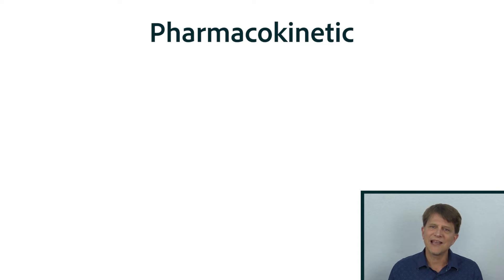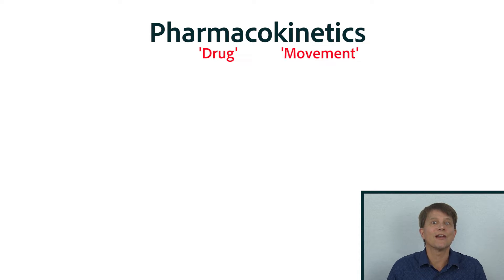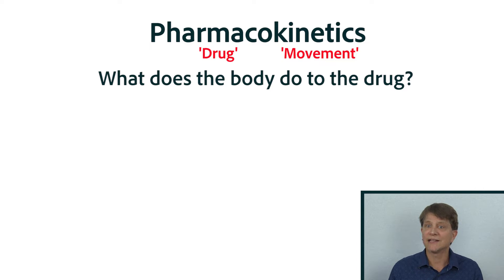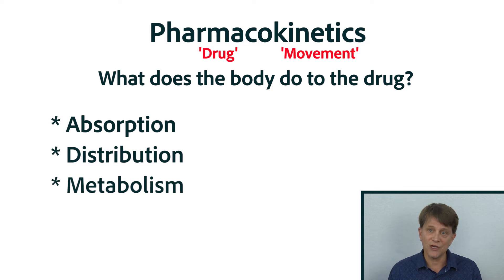The first portion of that word means drug, and the second portion — the kinetics portion — means movement. So in other words, we're going to begin to understand how our drugs move around the body and what the body does to the drug. When we're talking about pharmacokinetics, that'll involve four distinct processes: absorption, distribution, metabolism, and excretion.